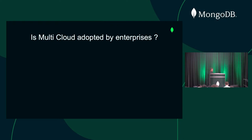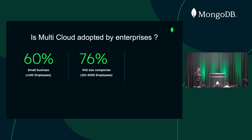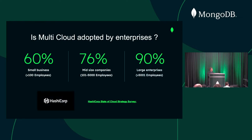Should we care? Are companies really adopting multi-cloud strategies? HashiCorp does a survey every year, and they're seeing that 60% of small businesses are actually adopting multi-cloud. This is something that's here to stay. We're also seeing 76% of mid-sized companies and about 90% of large enterprises are adopting multi-cloud.